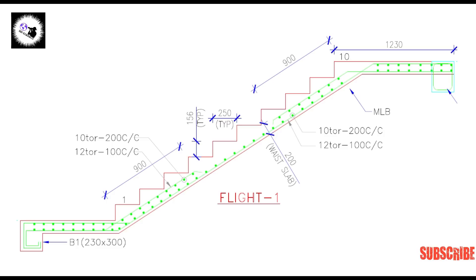Main bars are along with the span and distribution bars are perpendicular to the main bars. These main bars are 12 mm diameter, 100 mm center to center distance, and distribution bars are 10 mm diameter, 200 mm center to center.